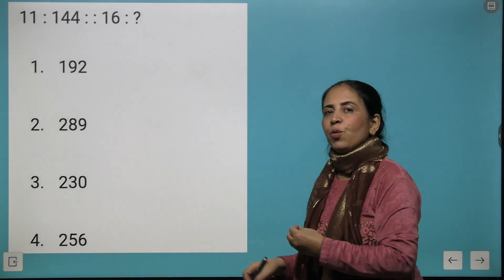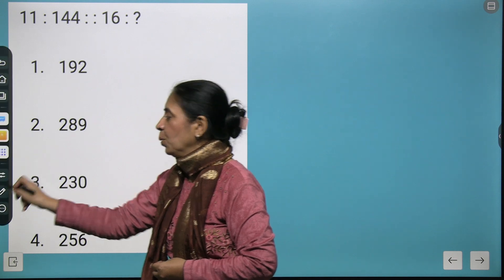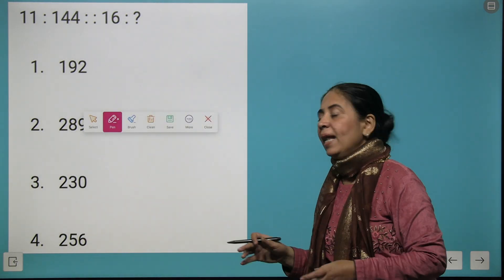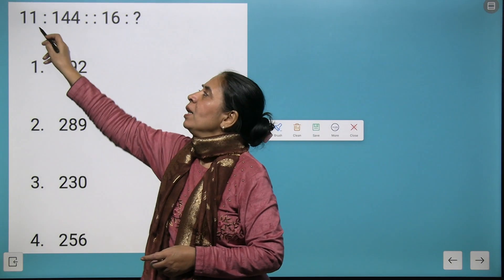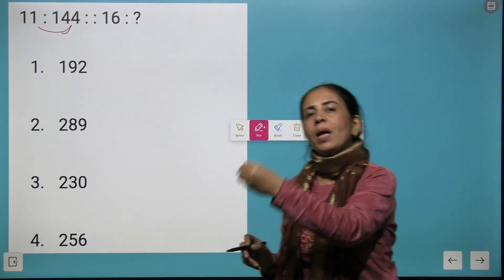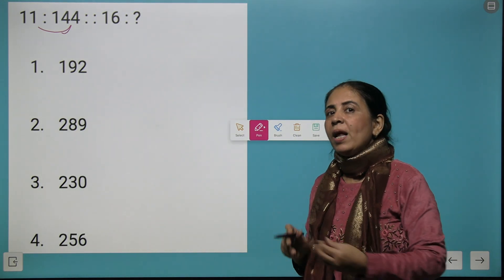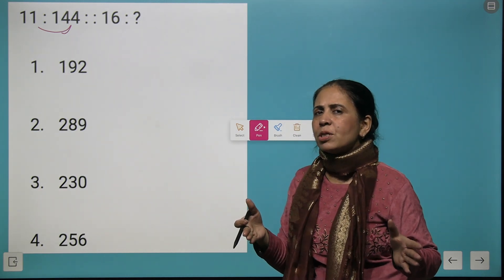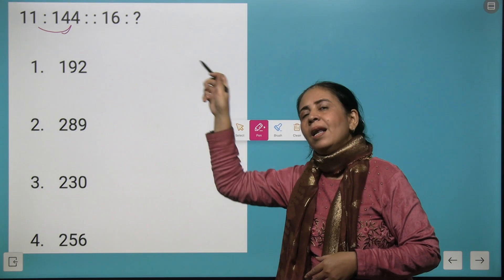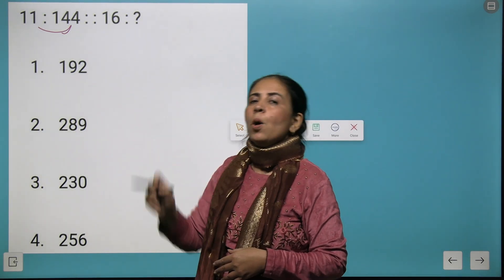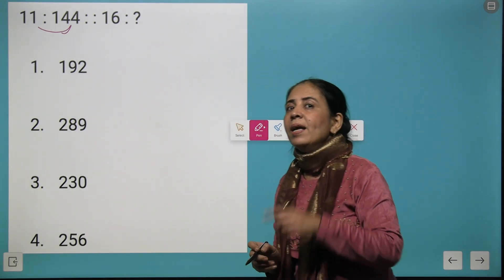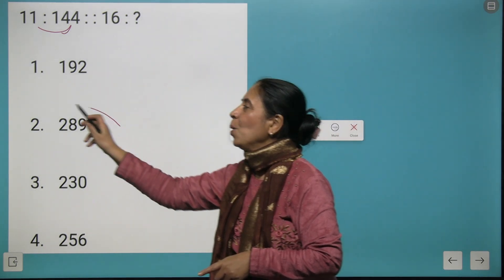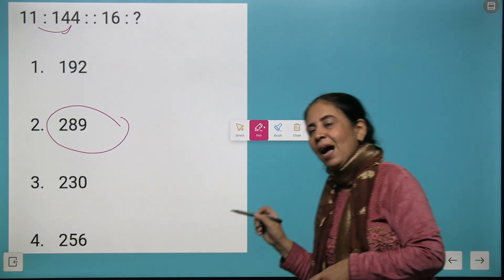Now I have few mathematical analogies for you. So the first combination given to you is 11 is to 144. Now first find out how 11 turns to 144. Let's have a trial. 11 plus 1 makes 12. And what is 12 times 12? We got the answer. Let's try the same thing for 16. What's 16 plus 1? 17. And what's 17 times 17? Here we got the right answer.